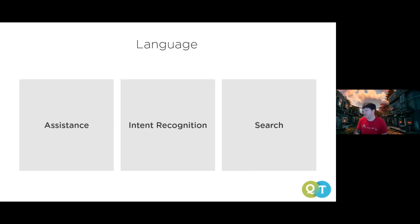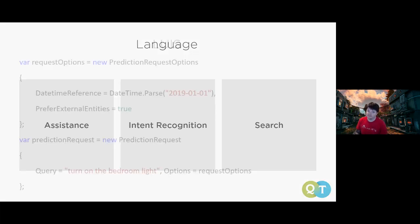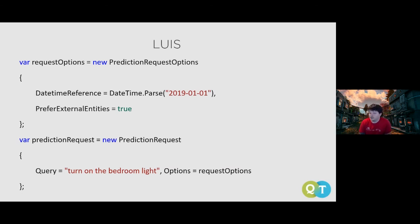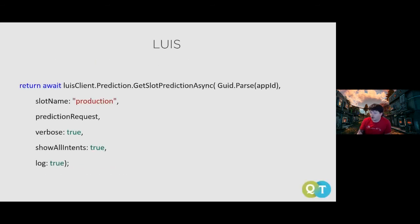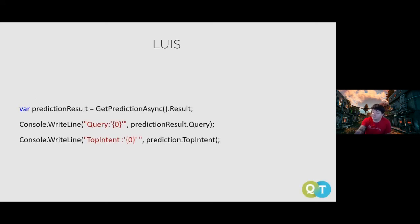For a LUIS prediction request, you send the utterance — for example, 'Turn on the bedroom light' — and call GetSlotPrediction() with your app ID, slot name 'production', and the request. The response gives you the original query and all detected intents ranked by probability, plus a top intent so you can quickly create an action based on what the user was looking for.